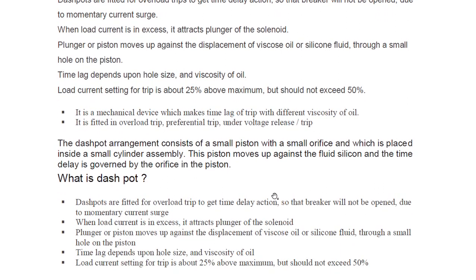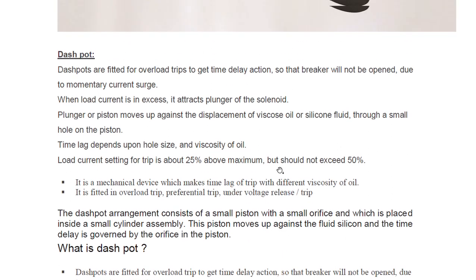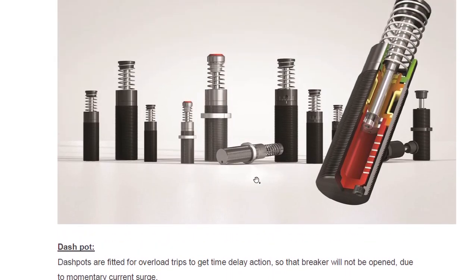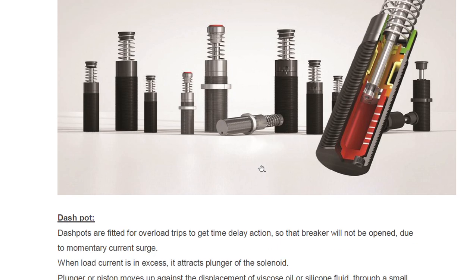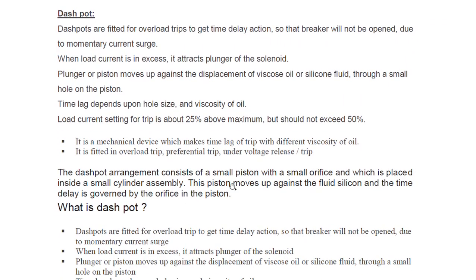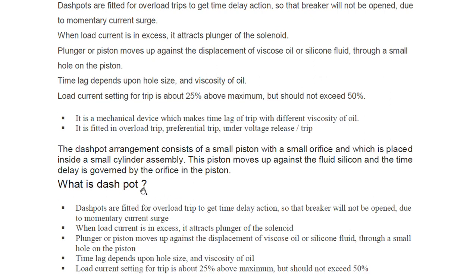The dashpot arrangement consists of a small piston with a small orifice, which is placed inside a small cylinder assembly — as you can see in the diagram. The small piston is placed inside the cylinder assembly with a small hole, filled with silicone oil. Depending on the viscosity of the oil, the piston moves up against the fluid, and the time delay is governed by the orifice in the piston.